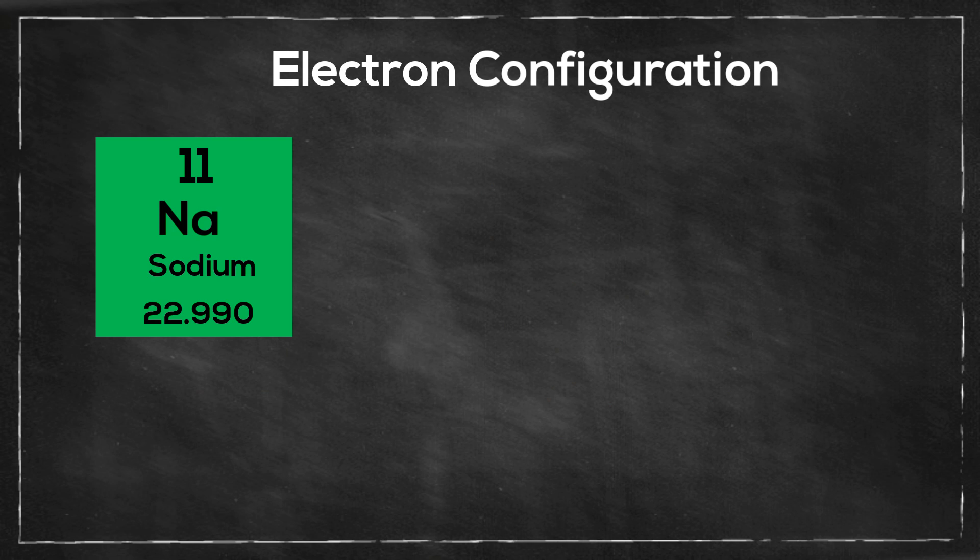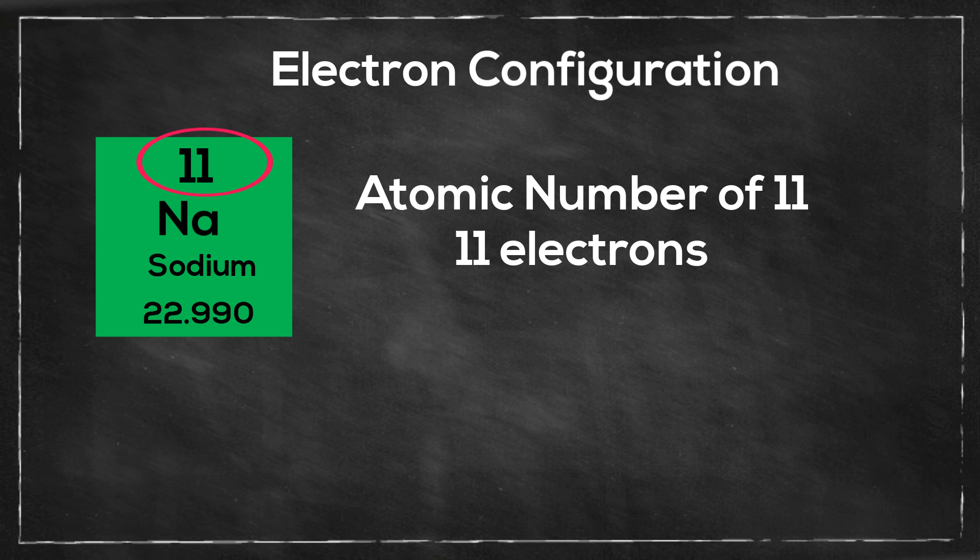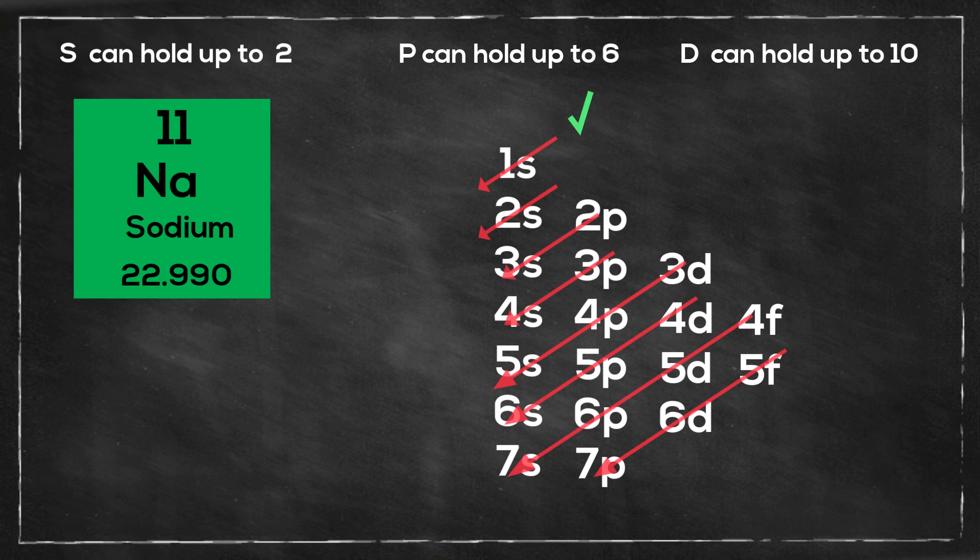Now I'll get started with sodium. I need to know how many electrons sodium has. It has an atomic number eleven, so it will have eleven electrons. I will start at 1s, and it can hold two, so it will be 1s2.